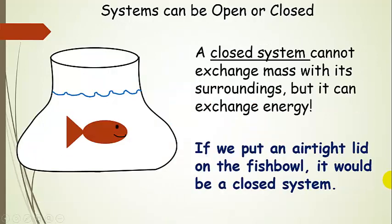We have two types of systems: they can be open or closed. A closed system can't exchange mass with its surroundings, but it can exchange energy. So if we put an airtight lid on this fishbowl, then we would have a closed system.